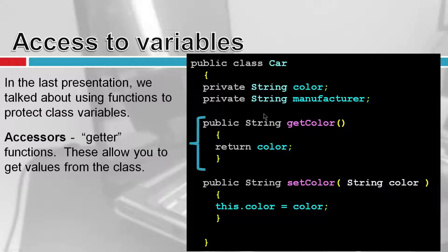Accessors and mutators are more commonly known as getters and setters. An accessor is how you can access the variables or values from the class. These are functions that start with the word 'get' — so if I wanted to get the color, get the manufacturer, or get the person's name, it'll be a function called 'get' that returns the value. Accessors are the getters — how somebody accesses your class.